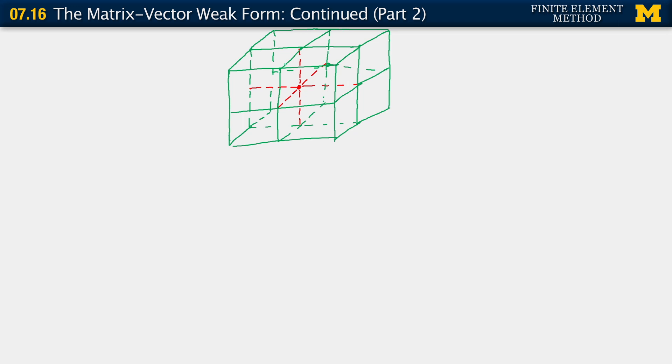I have here a node which I'm going to denote as a bar because it's a global node. So what I have here is a global node, a global degree of freedom a bar. That's the node corresponding to the global degree of freedom. I want to emphasize here that it belongs to how many elements? It belongs to eight different elements.